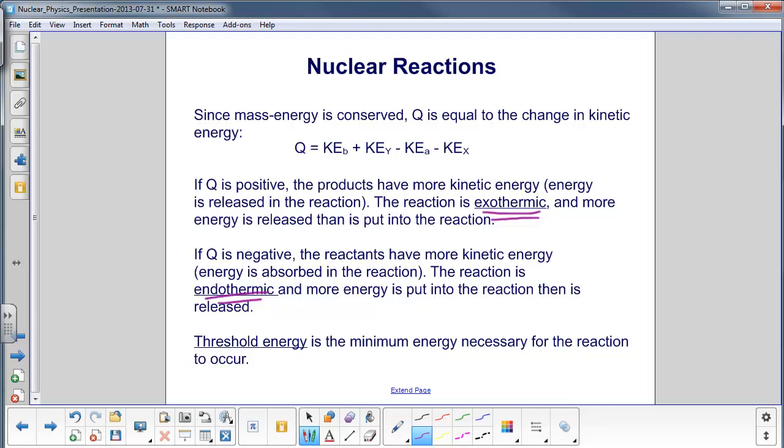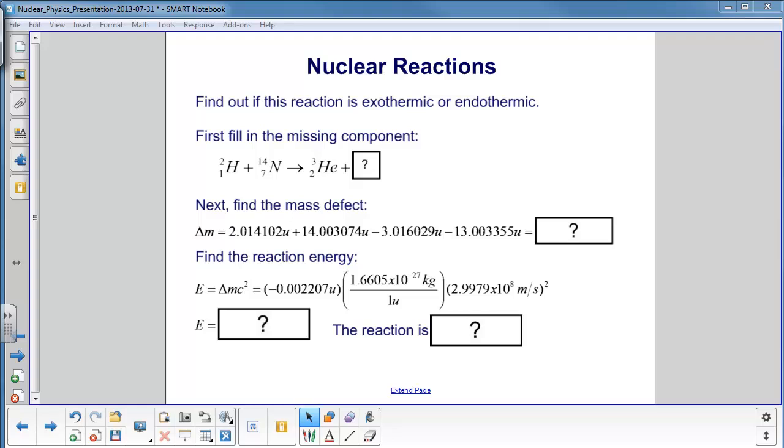So let's work some problems. Find out if this reaction is exothermic or endothermic. If we come up with a Q value that's positive, it will be exothermic. A negative Q, it will be endothermic. So first we have to find the missing component.